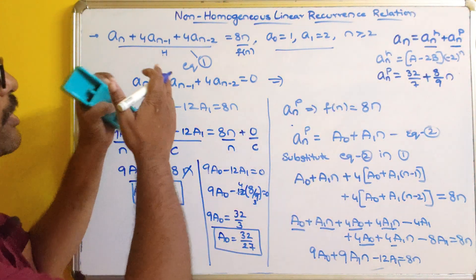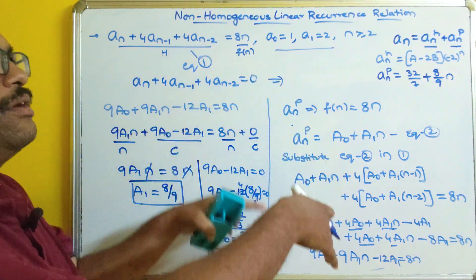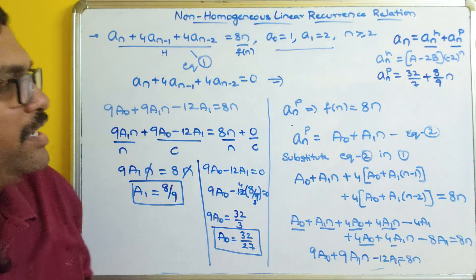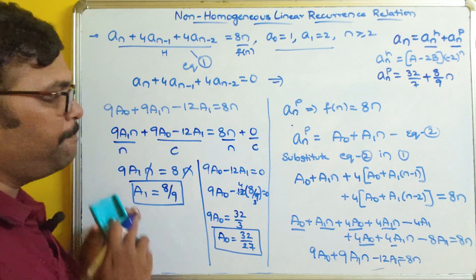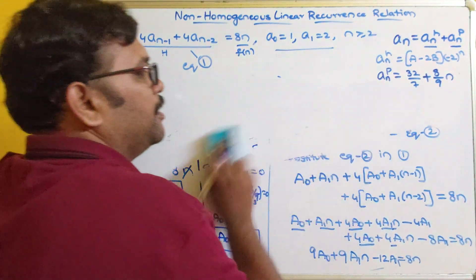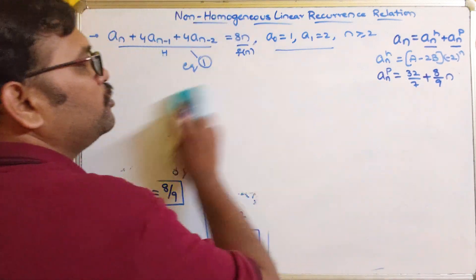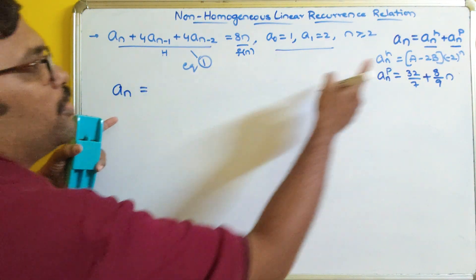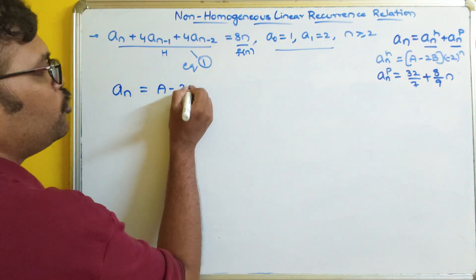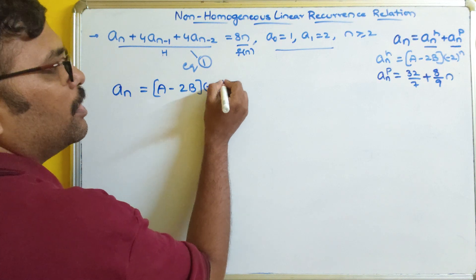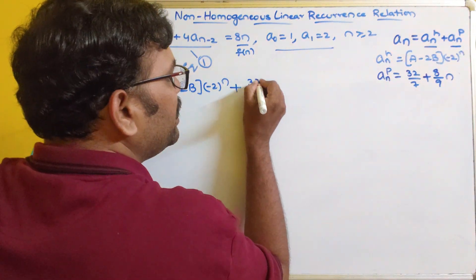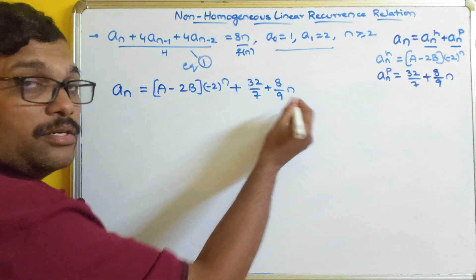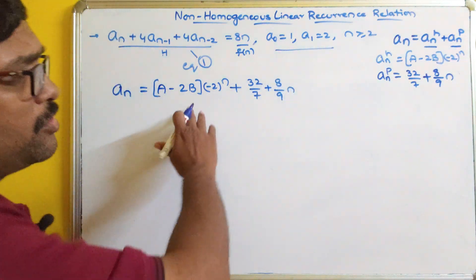This is the general solution for the homogeneous part, and this is the general solution for the function part. We have calculated the general solution for both terms equally. Now we find the general solution for the complete non-homogeneous linear recurrence relation. So a_n = a_nh + a_np = (a + bn)(-2)^n + 32/27 + (8/9)n. If your question doesn't have initial values, this will be the final result.